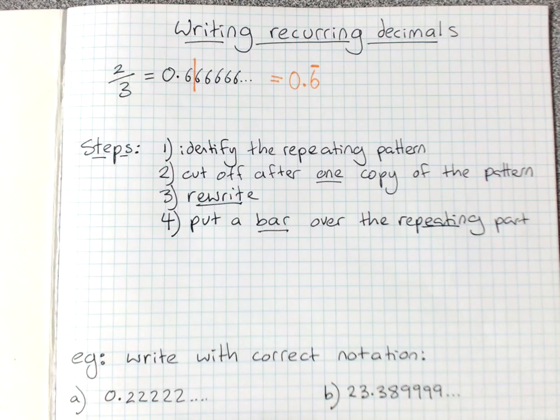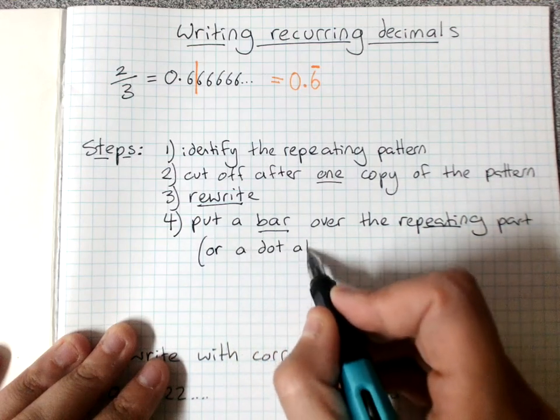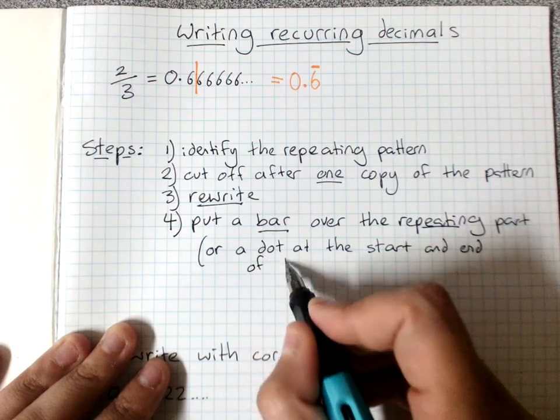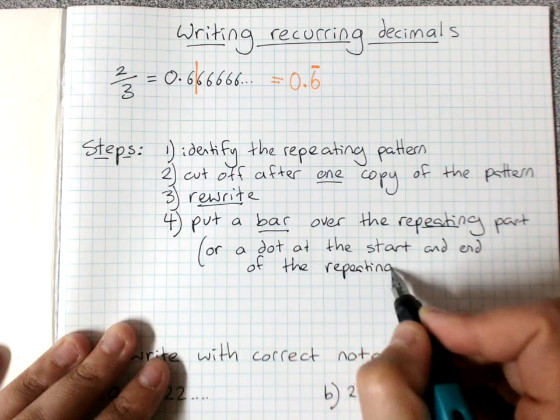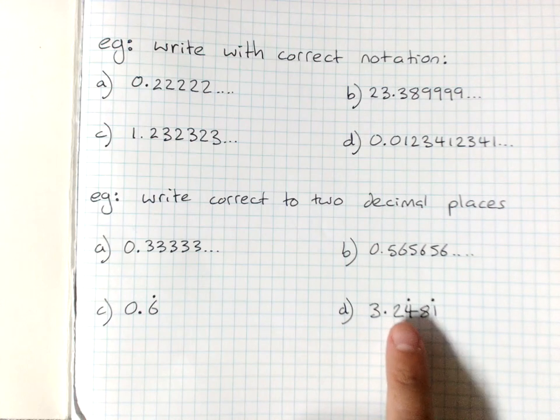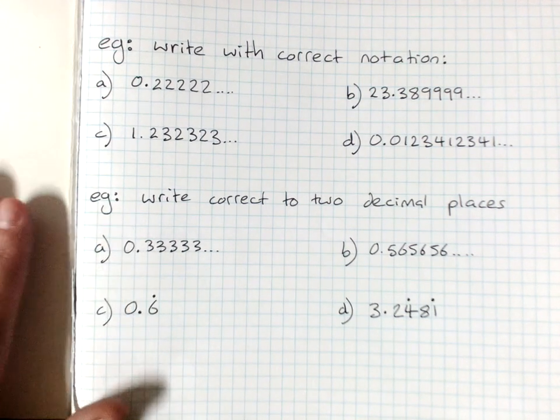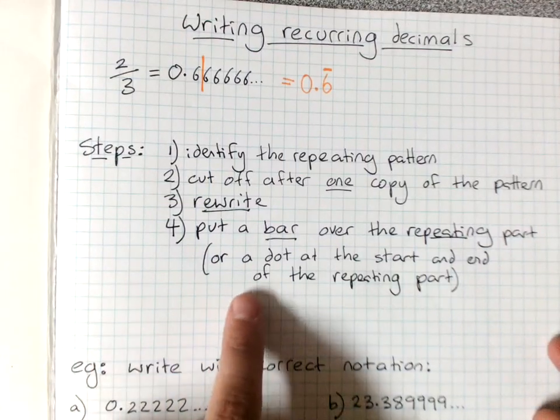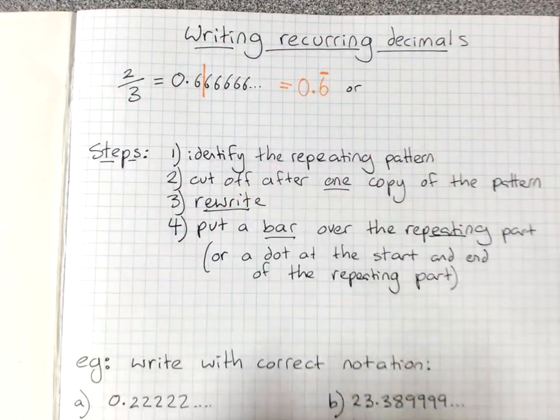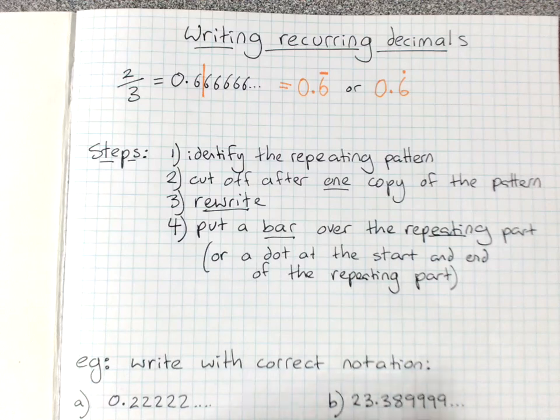Now some people do put a dot at the start and end of the repeating pattern, but that's harder. So if you look at my examples down here, you'll see that a dot at the start and end of the repeating pattern, a dot above the repeating number is also an option, and you need to be able to recognize that, but it's much easier to use a bar. So I could have written this as 0.6 with a dot above the 6, but it's easier to learn the bar system.